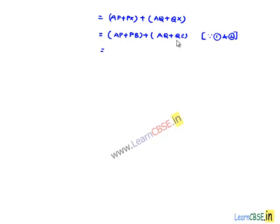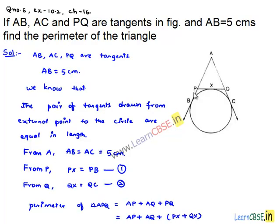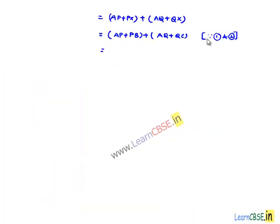From the figure, AP plus PB equals AB, and AQ plus QC equals AC. Therefore, this equals AB plus AC.